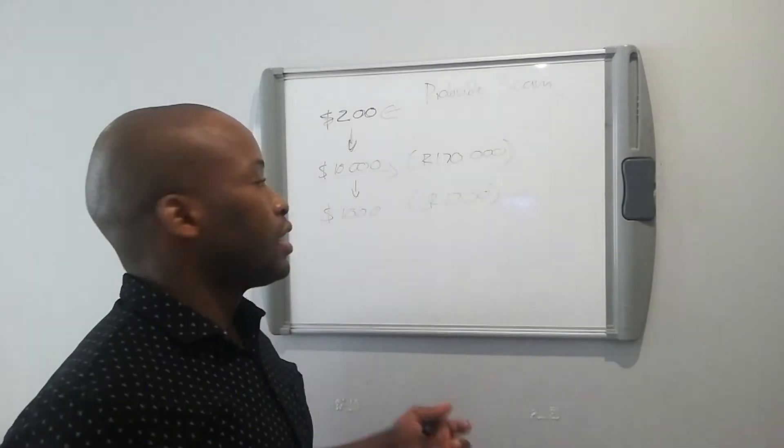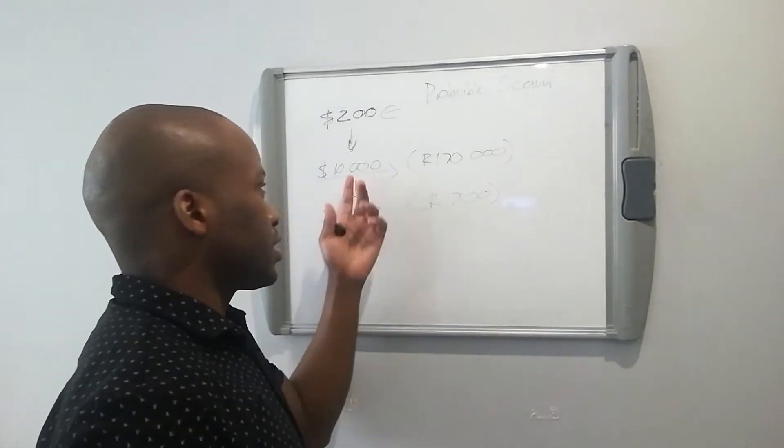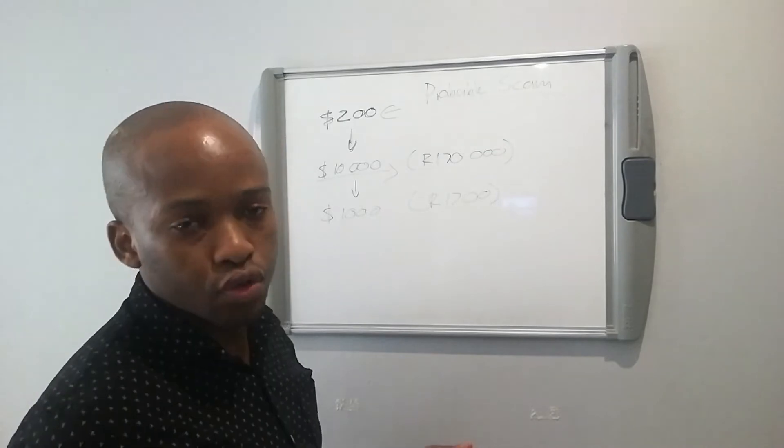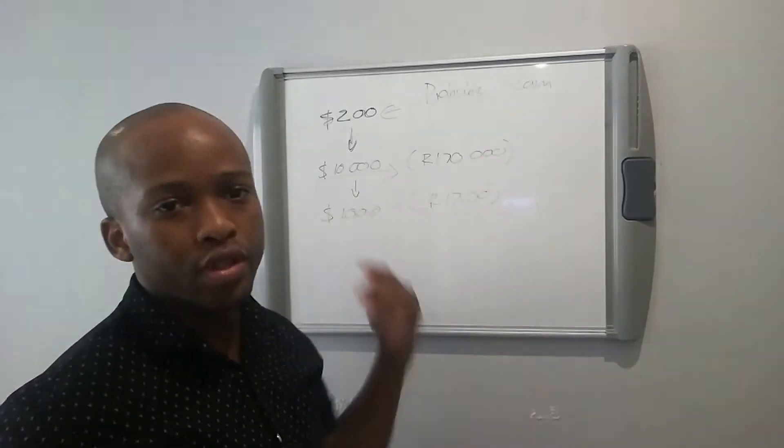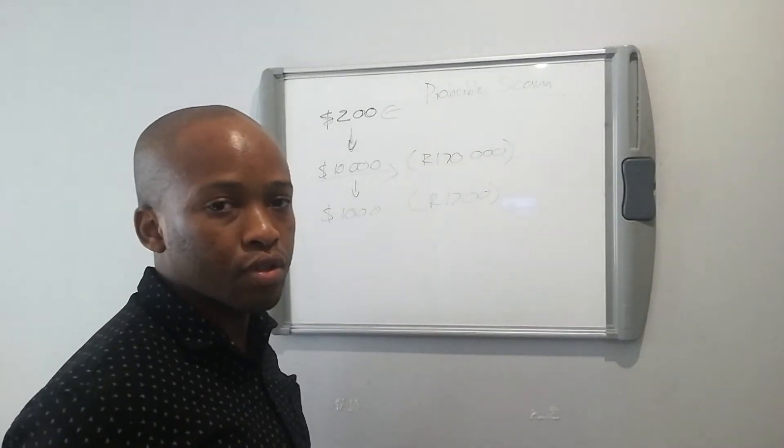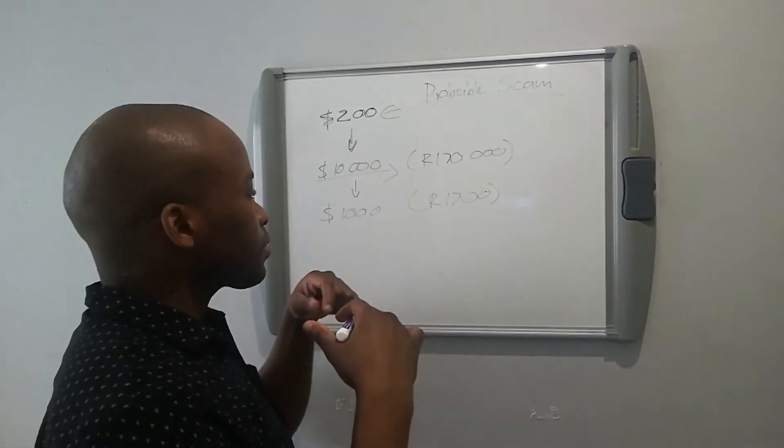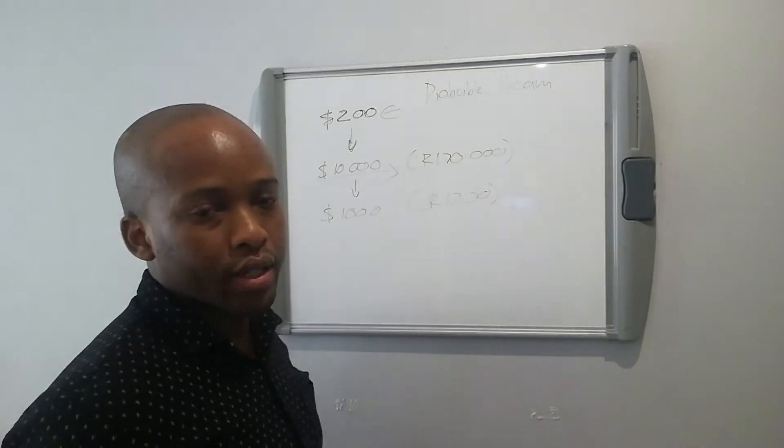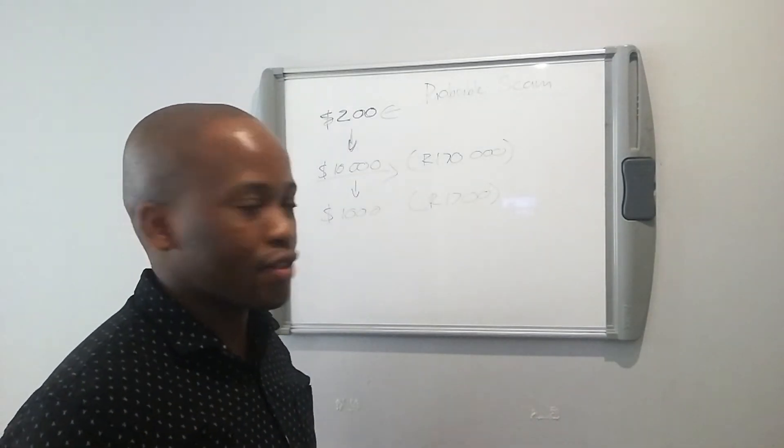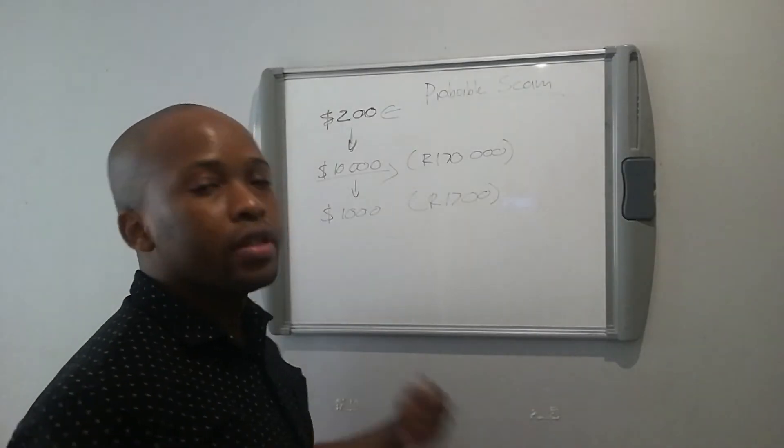They tell you that you have over 100,000, which is like $10,000. So let's just use an example of 170,000 rand, which is $10,000 to be exact. And obviously this is going to get you excited. This is where the scam basically starts.